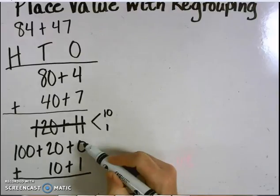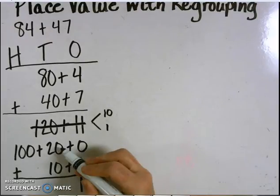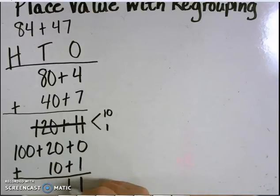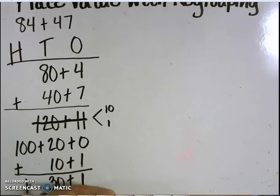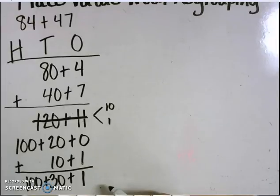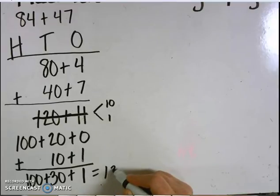I'm going to add the ones place. 0 plus 1 is 1, 20 plus 10 equals 30, and I have one group of 100 left over. 100 plus 30 plus 1 equals 131.